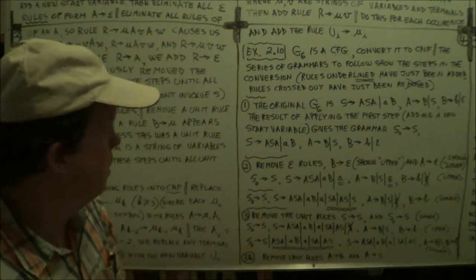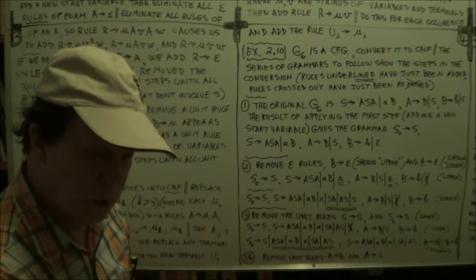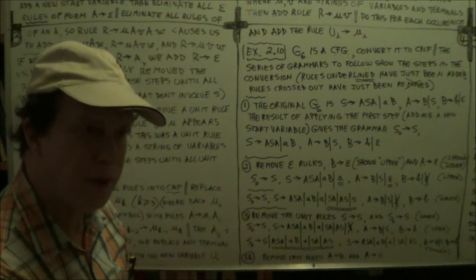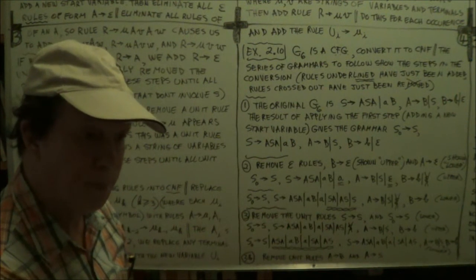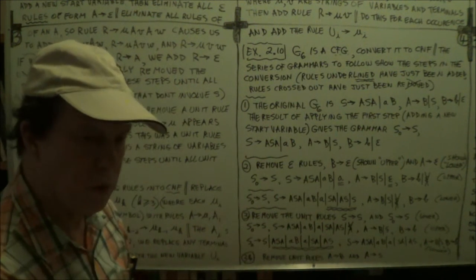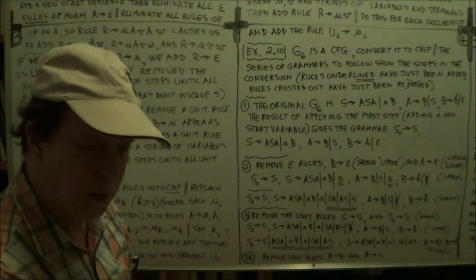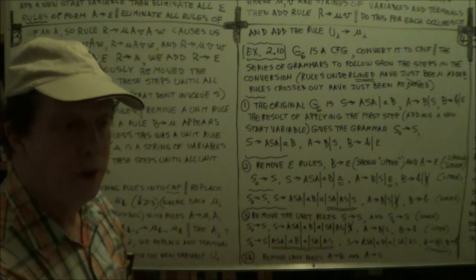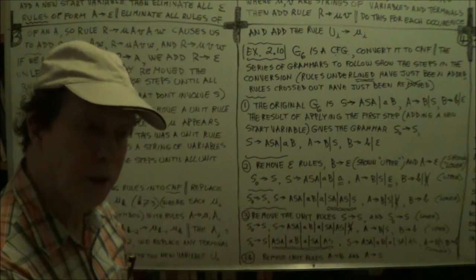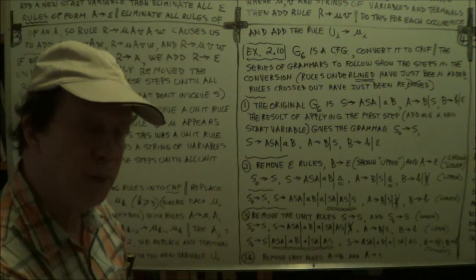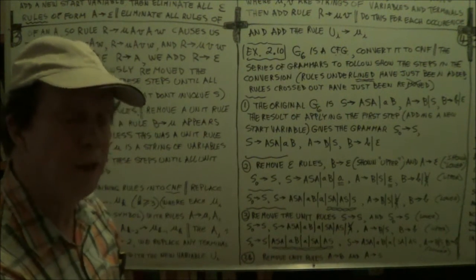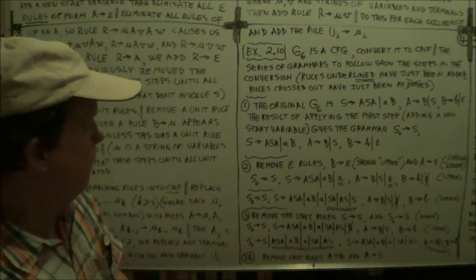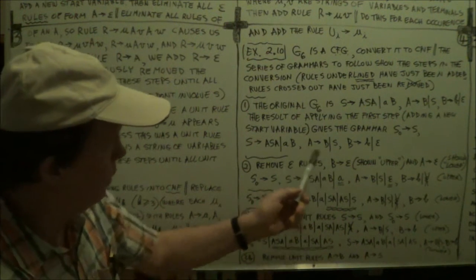Alright. Now, step two is, we remove the epsilon rules. So we remove all those rules that have epsilon as a right-hand side, the empty string. And then after that, we'll remove the rules that have a single variable. We won't remove the rules that have a single terminal on the right-hand side. That's fine. That's compatible, right? Remember? That's compatible with CNF. Okay. So there's a certain logic. Yeah. It makes sense as you get into it more. Alright. Okay. Now, step two, remove the epsilon rules. Now things get a bit more complicated.